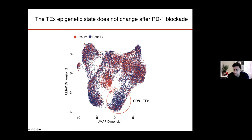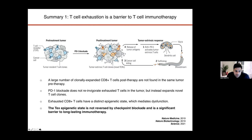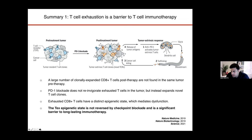Therefore, we think that PD-1 blockade does not enable these cells to robustly enter the effector response again. What I've shown so far is that using clonal lineage tracing of T-cells, a large number of clonally expanded T-cells post-PD-1 blockade are not present in the same tumor pre-therapy, and PD-1 blockade does not reinvigorate exhausted T-cells in the tumor microenvironment, but instead recruits a novel set of clones to fight the tumor. This epigenetic state of exhaustion represents a significant and long-lasting barrier to immune responses to cancer.